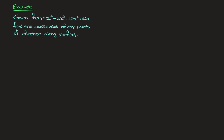In this second video on points of inflection, I'm going to be working through the example you see here, and I'll be finding this function's points of inflection. Although I'm going to start by drawing this function's curve, I'm going to be assuming throughout this video that we don't have access to a graphical calculator. To check that the points we find are indeed points of inflection, we're going to be studying the sign of this function's second derivative using a sign table. So let's get started.